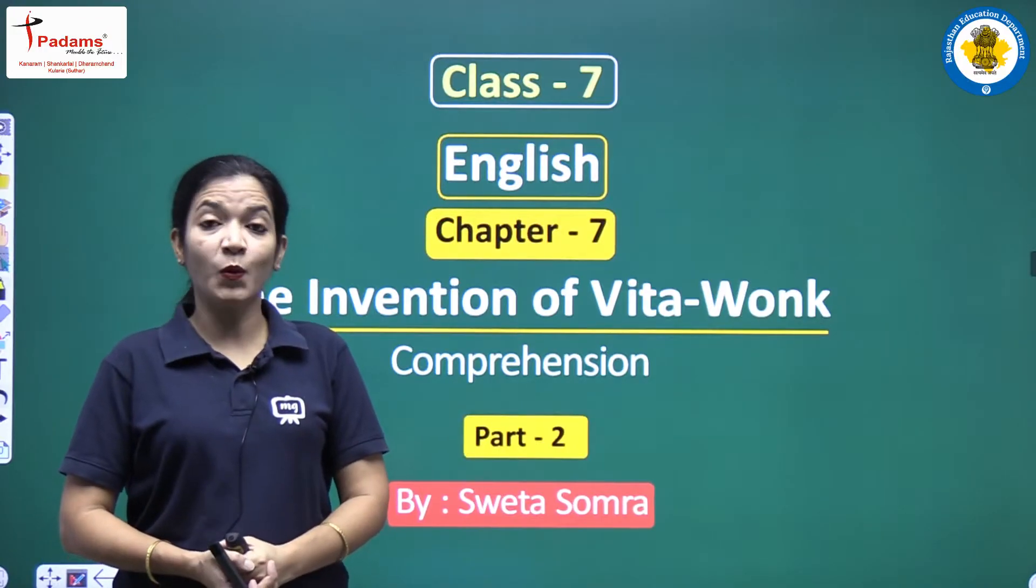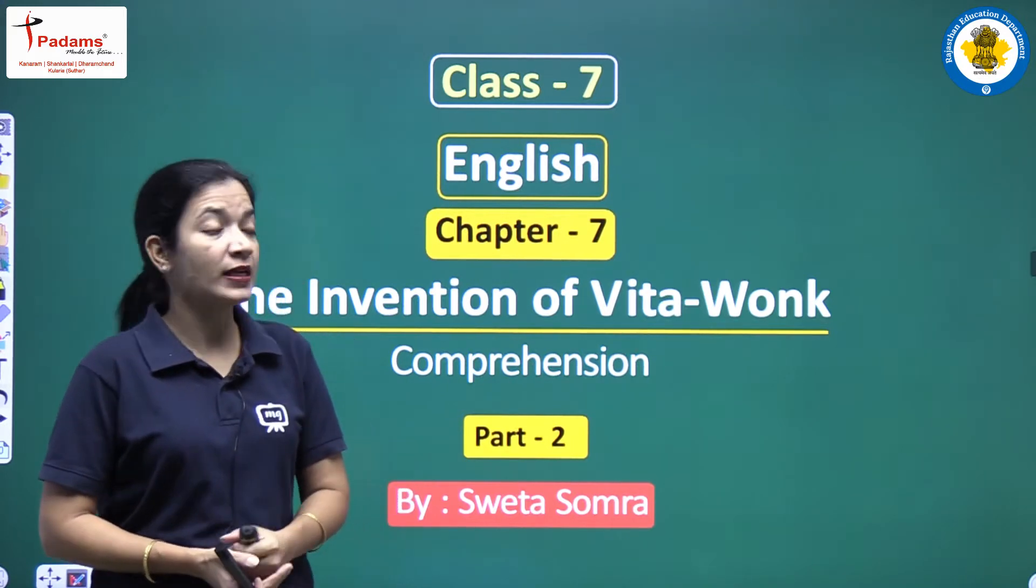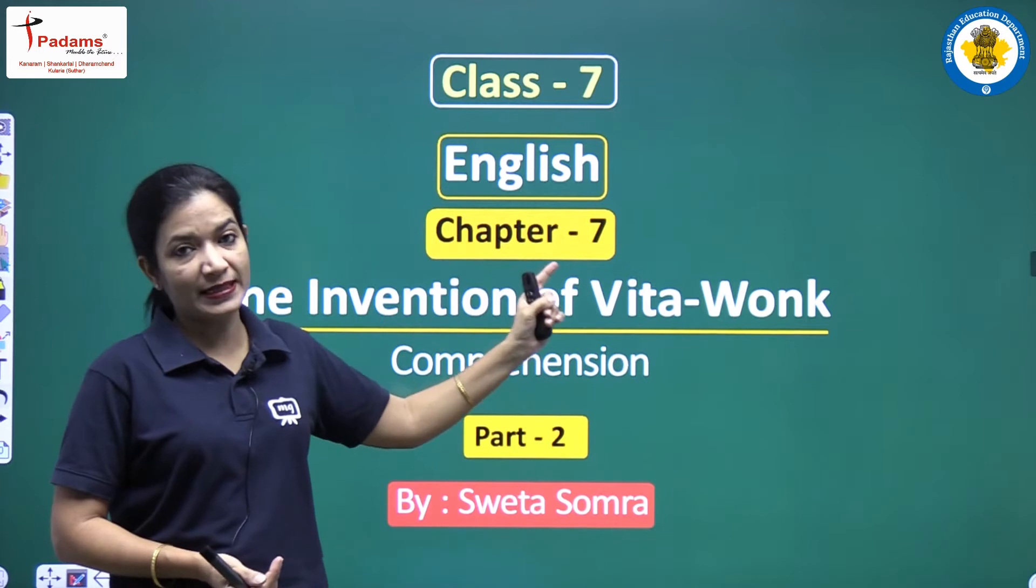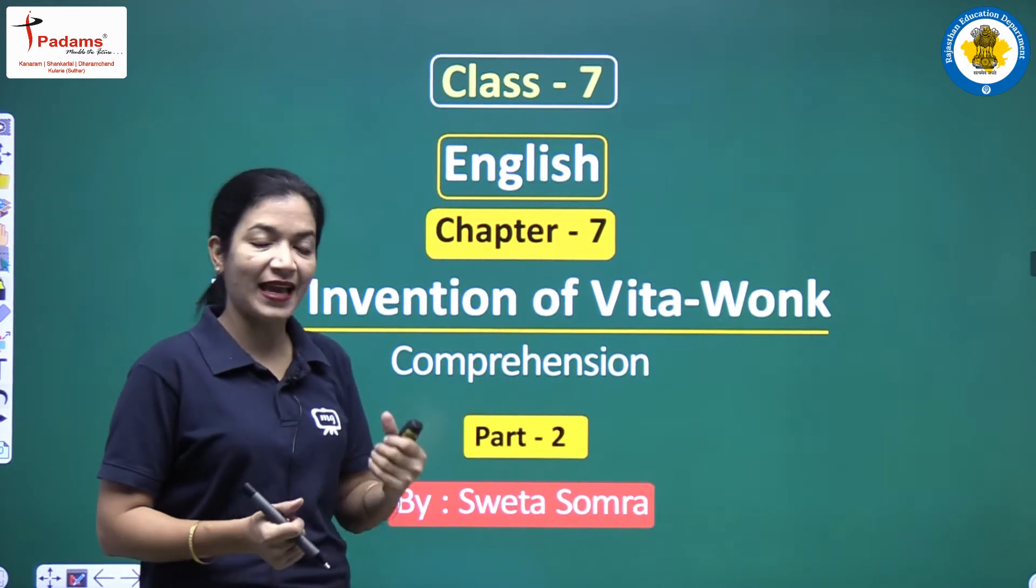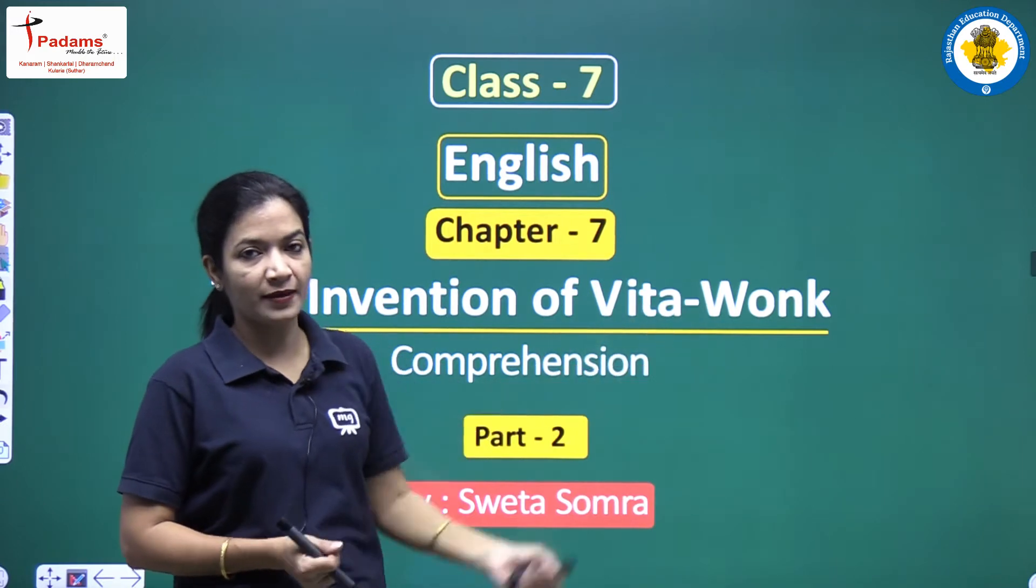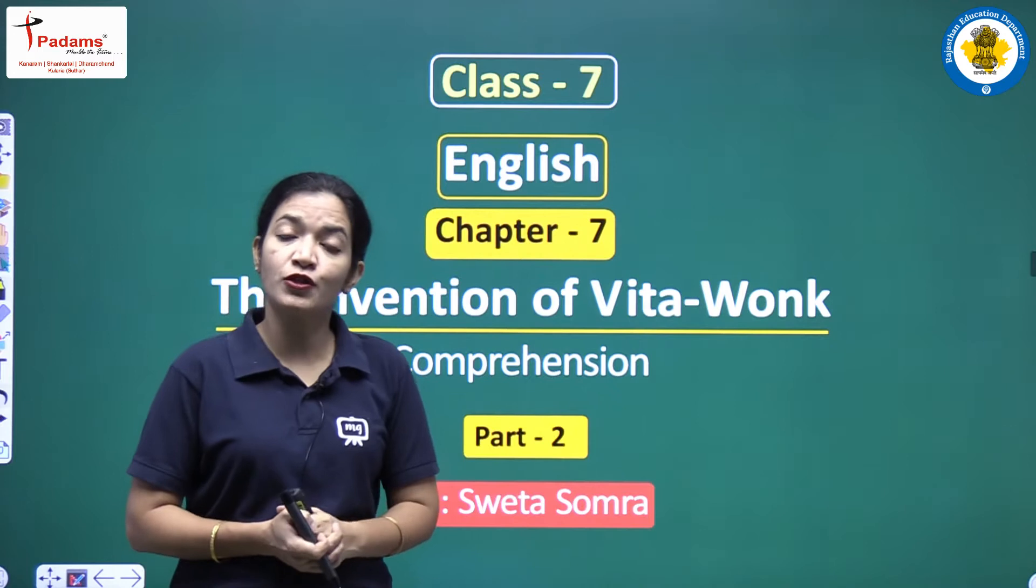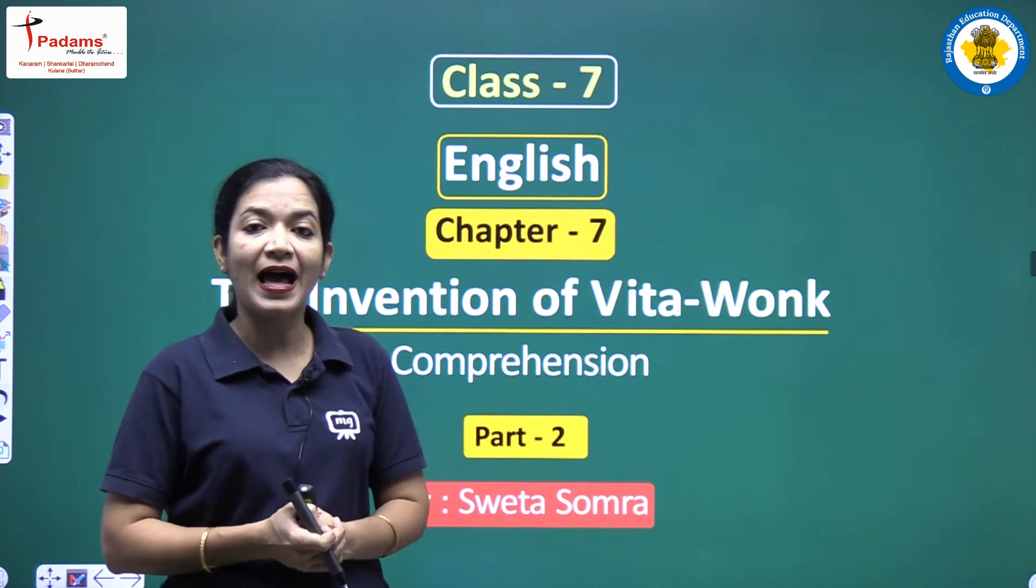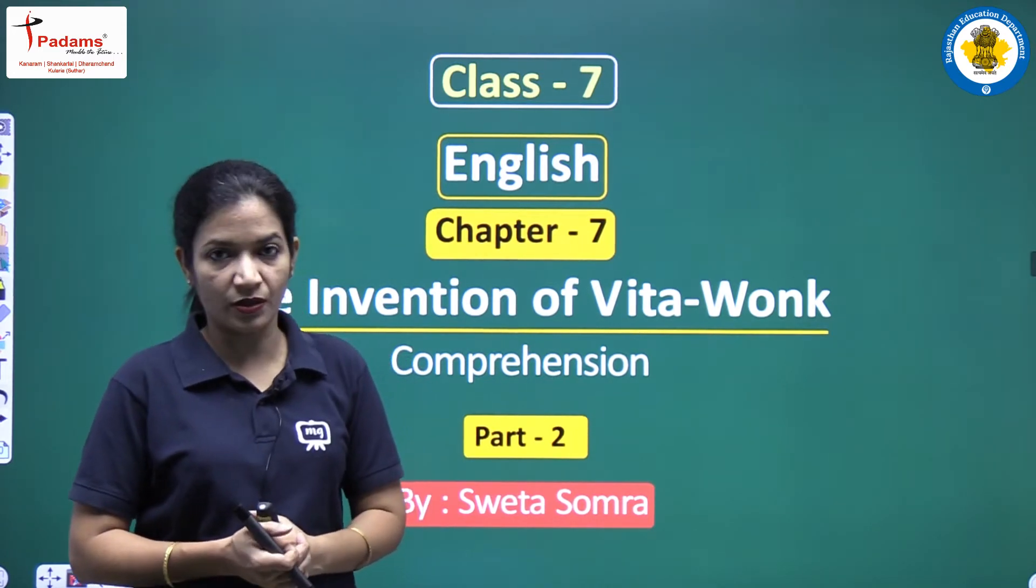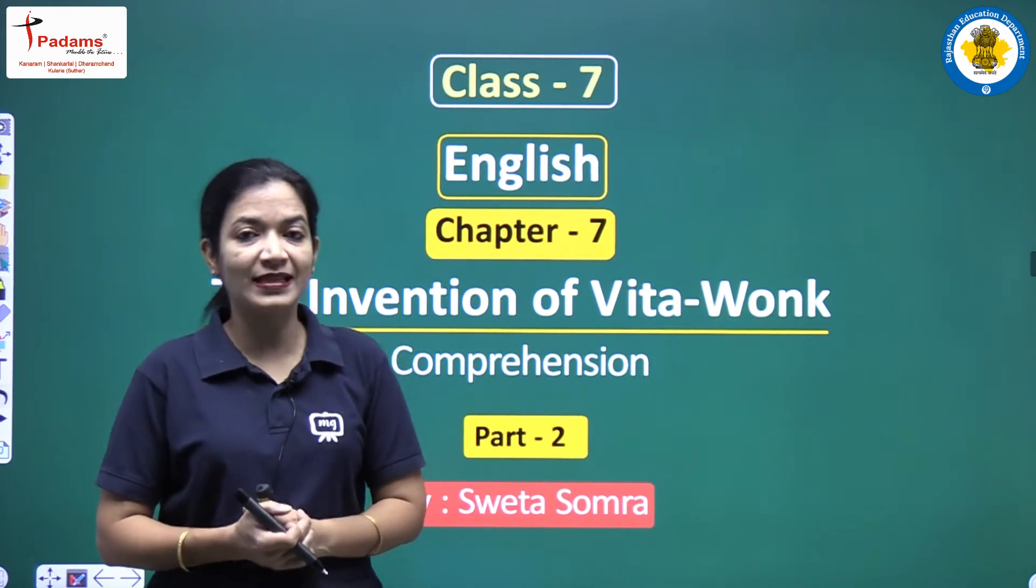Good morning students, welcome back to the second part of Class 7th English. We were reading Chapter 7, titled 'The Invention of Vita-Wonk'. This chapter is an excerpt from a story book which is 'Charlie and the Great Glass Elevator'. I, Sweta Somra, am your English teacher and today we will discuss this chapter and the second part.